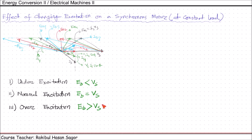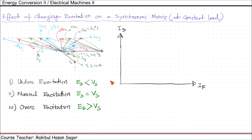Now let us plot the field current, which is actually excitation on a synchronous motor, versus the armature current, that means motor current Is. It is to be noted that the field current is always DC, and the armature current is AC. Now if we take the y-axis and x-axis — in the x-axis we are going to take field current, and in the y-axis we are going to take armature current, that is Is. Suppose we are starting from here for a particular field current at constant load, we are getting the armature current Is having this value. If we consider the magnitude only, then this value corresponds to this point.